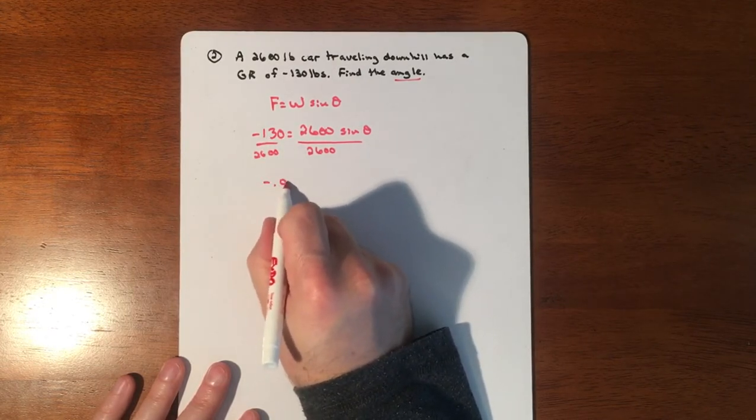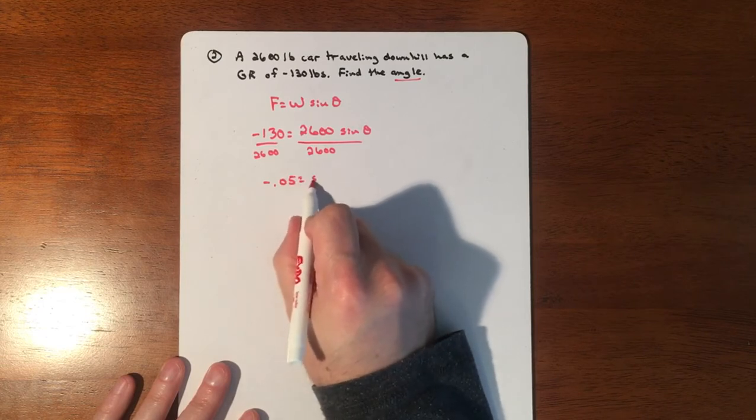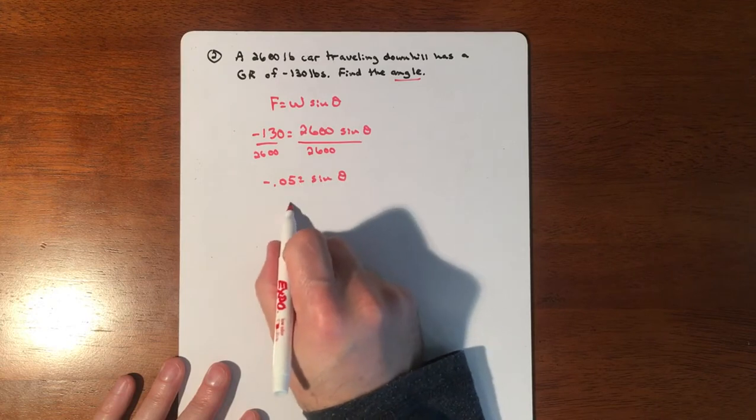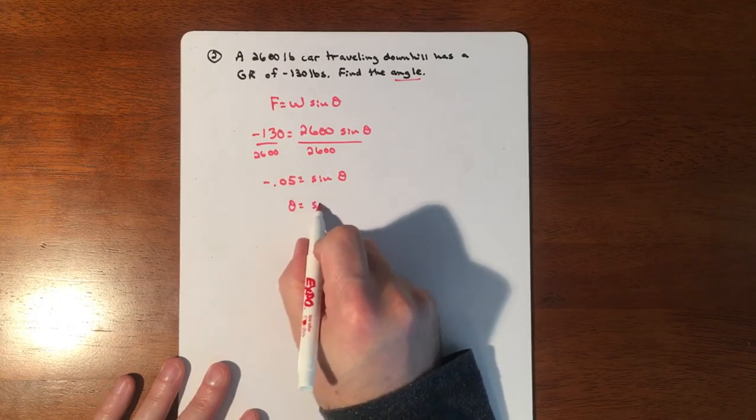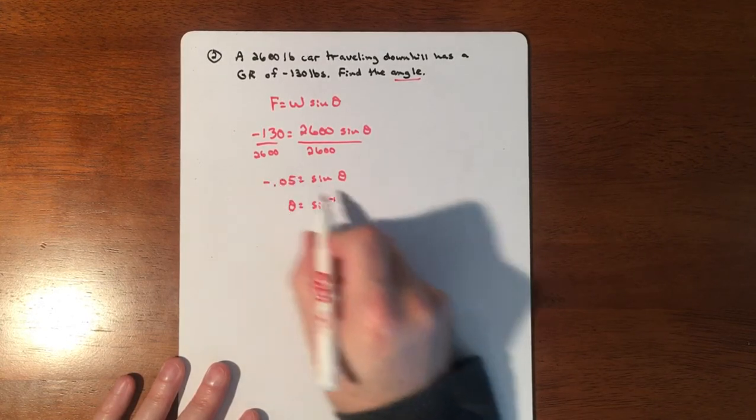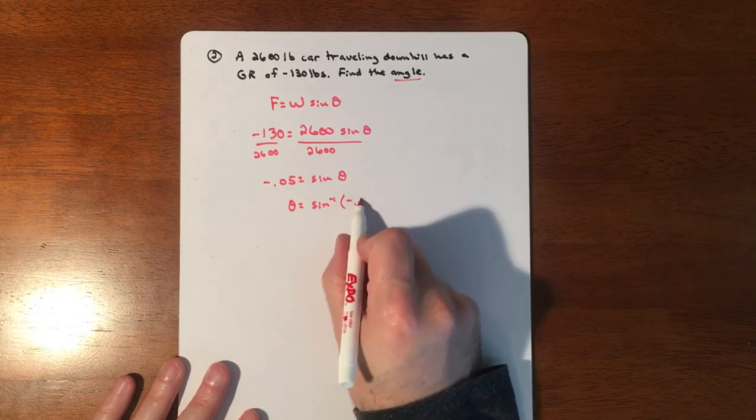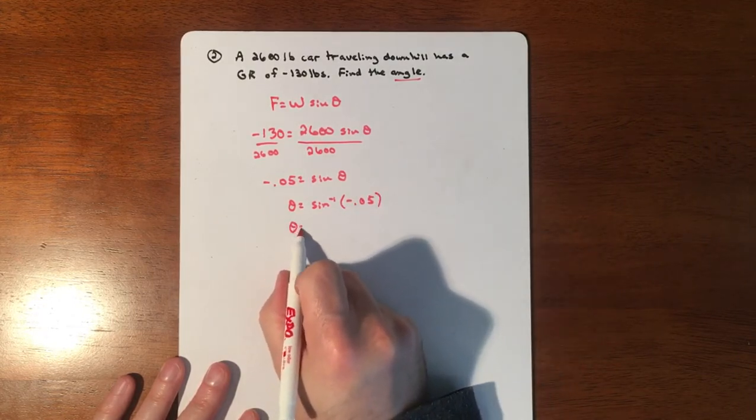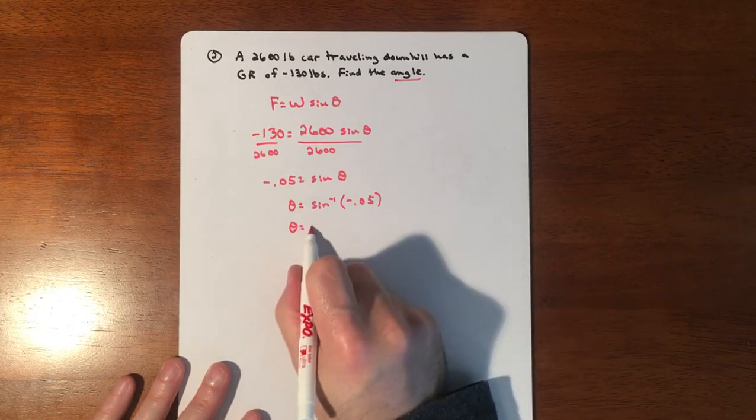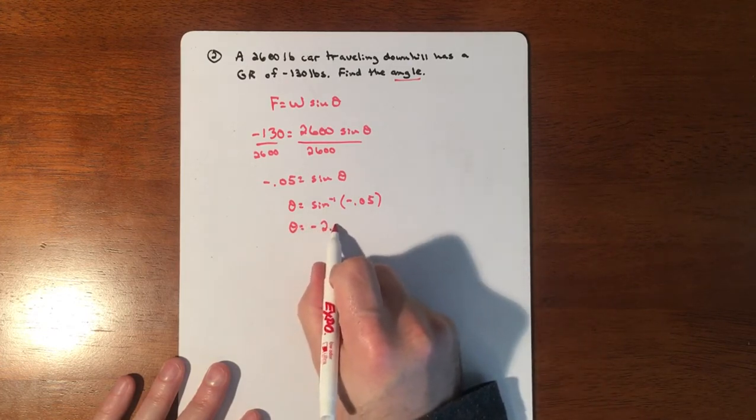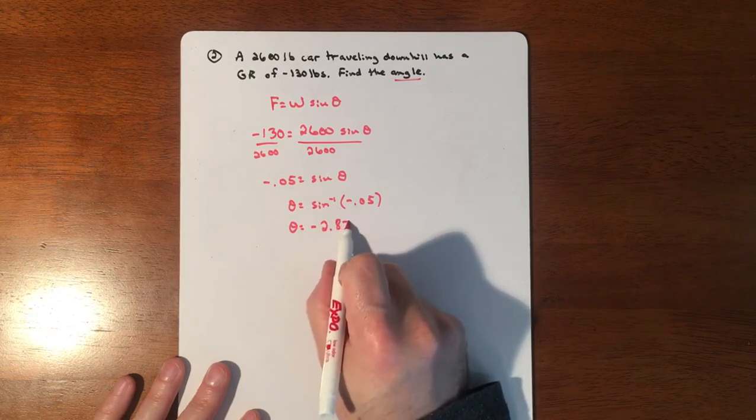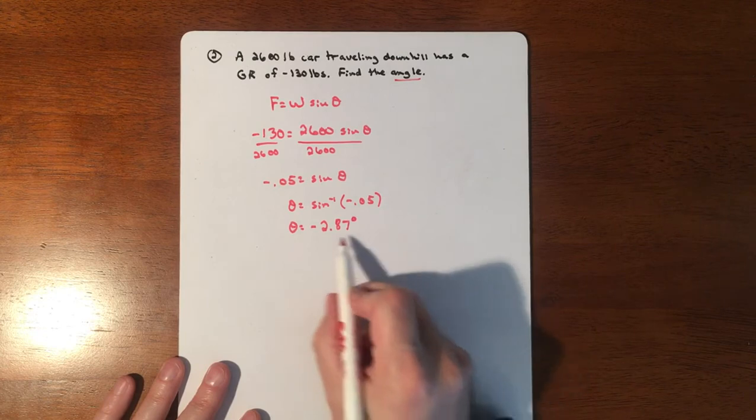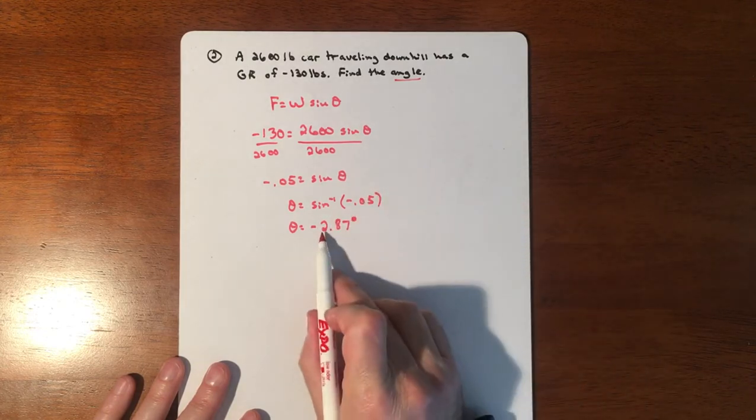Then we are going to do the inverse sine of this, so theta is going to be the inverse sine of that decimal, negative 0.05. If we plug that into a calculator, the calculator is going to spit out negative 2.87 degrees.